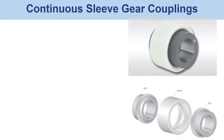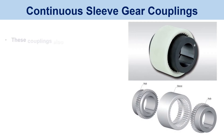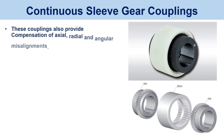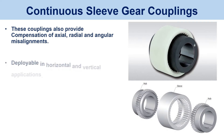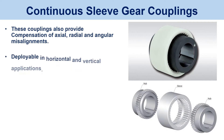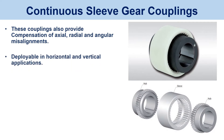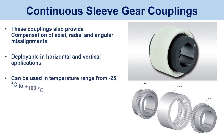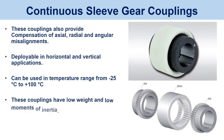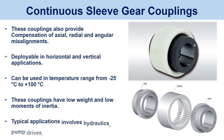Continuous sleeve gear couplings. These couplings also provide compensation of axial, radial, and angular misalignments. Deployable in horizontal and vertical applications. Can be used in a temperature range from -25°C to +100°C. These couplings have low weight and low moments of inertia. Typical applications involve hydraulics and pump drives.